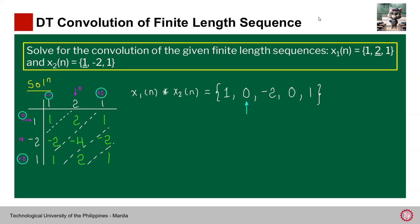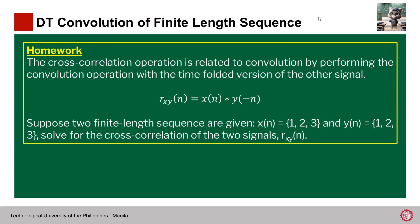Now for the homework problem, let me read it. The cross-correlation operation is related to convolution by performing the convolution operation with a time-folded version of the other signal. So r_{xy}(n) equals x(n) convolution with y(-n), the time-folding of y(n). Suppose two finite length sequences are given: x(n) is {1, 2, 3} and y(n) is {1, 2, 3} also, solve for the cross-correlation of the two signals, r_{xy}(n). That is your homework problem. Just comment your answers. See you guys in the next video. Bye!